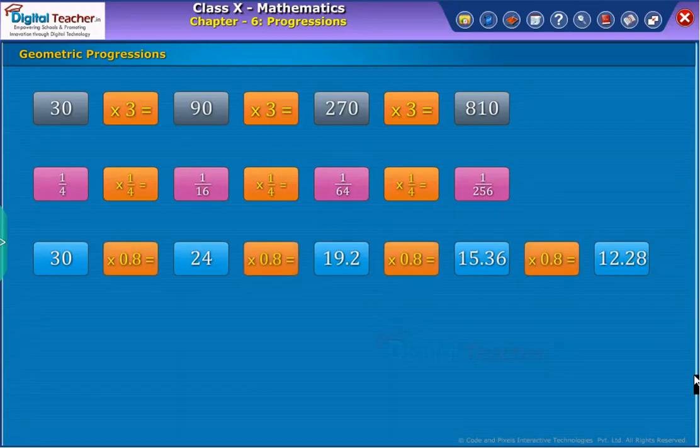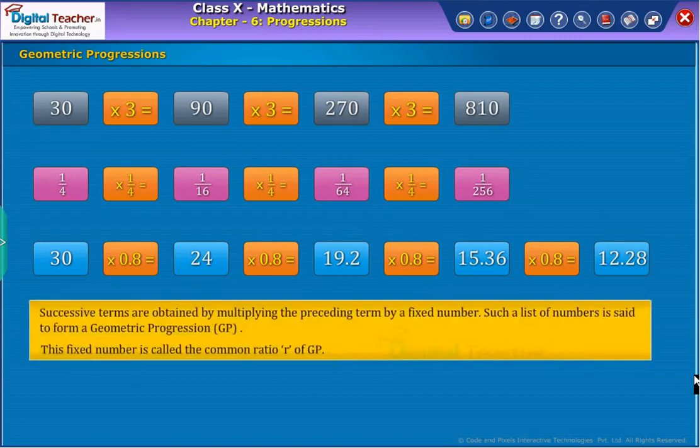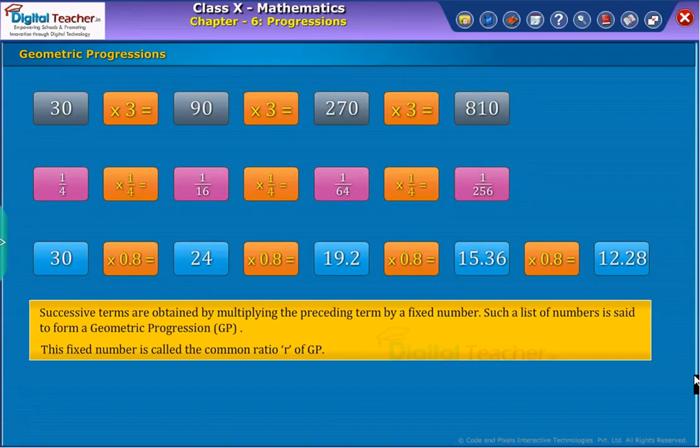Whereas in the third list of numbers, each term is obtained by multiplying the preceding term by 0.8. From above list of numbers, we observe that successive terms are obtained by multiplying the preceding term by a fixed number. Such a list of numbers is said to form a geometric progression, GP. This fixed number is called the common ratio R of GP.